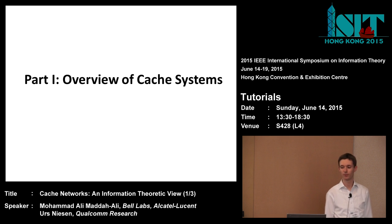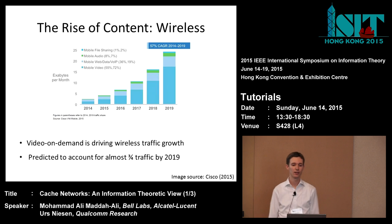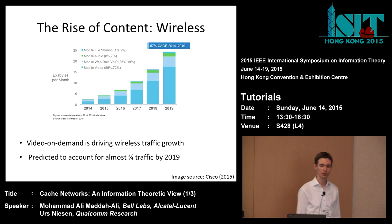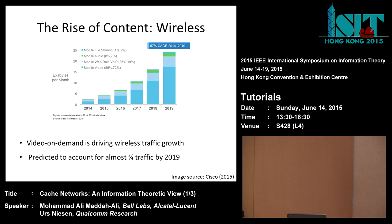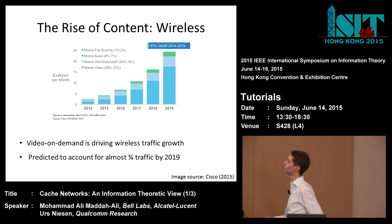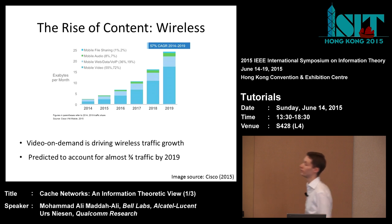Let me start with part one — an overview of cache systems. The reason why caching is relevant today is because of the rise of content. I'm showing here a figure from a Cisco study which shows how much of wireless traffic is content. Cisco predicts that by 2019, the vast majority of mobile traffic will be video related.